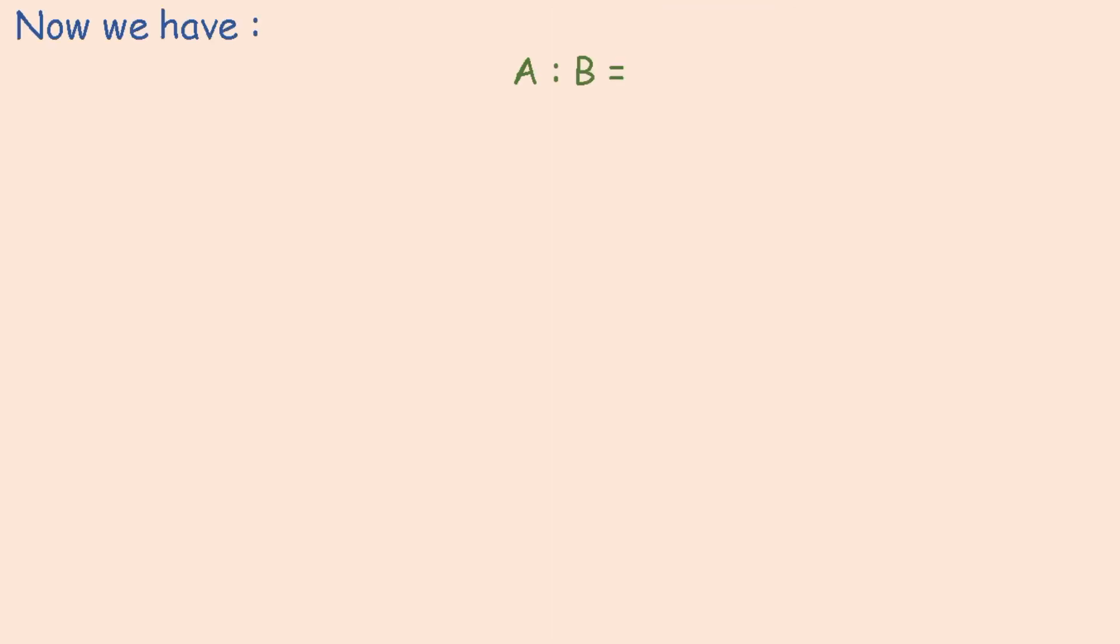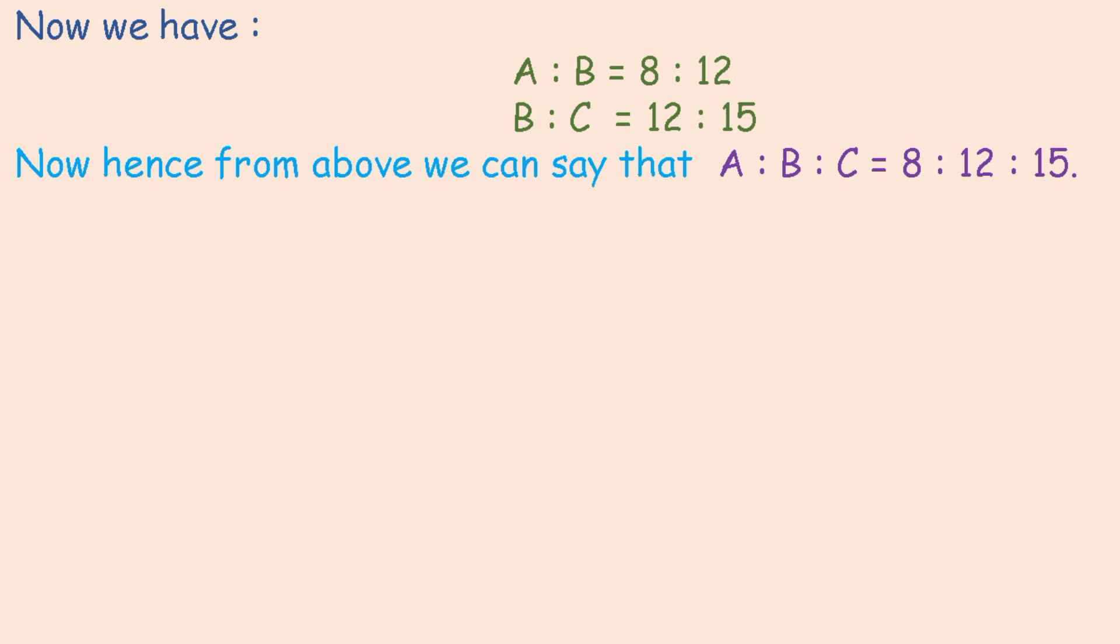Now we have, after multiplication, A ratio B is equal to 8 ratio 12, and B ratio C is equal to 12 ratio 15. Hence, from above we can see that A ratio B ratio C is equal to 8 ratio 12 ratio 15, and that's our answer.